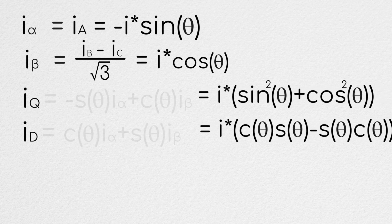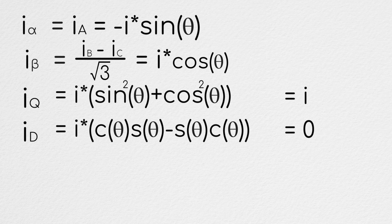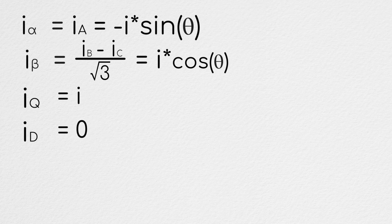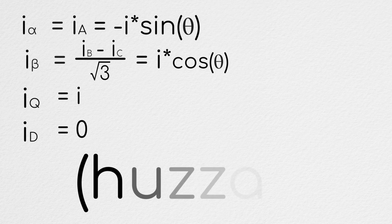Plugging everything in, we see that the currents in the d direction all cancel out. And by using the identity that sine squared plus cosine squared is equal to 1, we can see that the current in the q direction is constant, meaning we've completely gotten rid of our torque ripple.